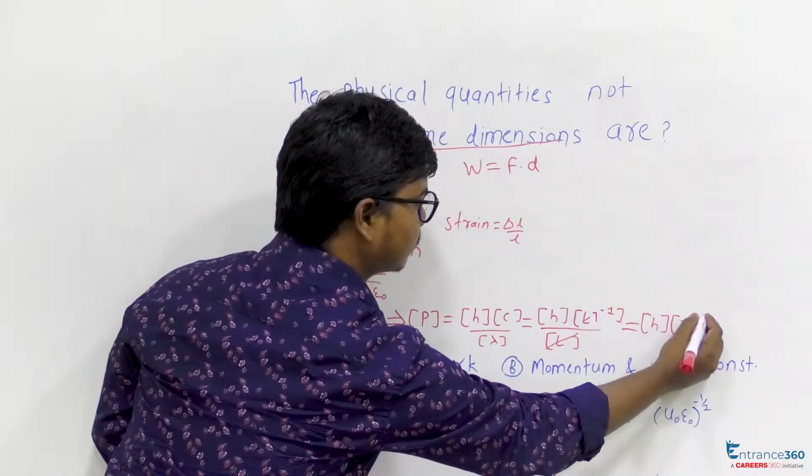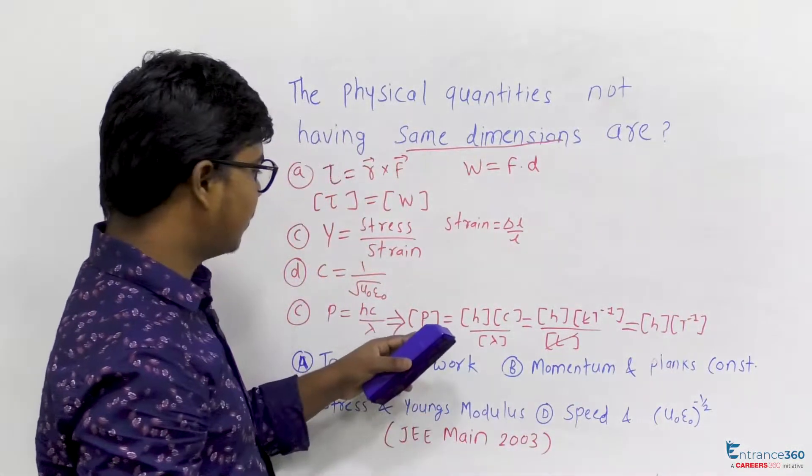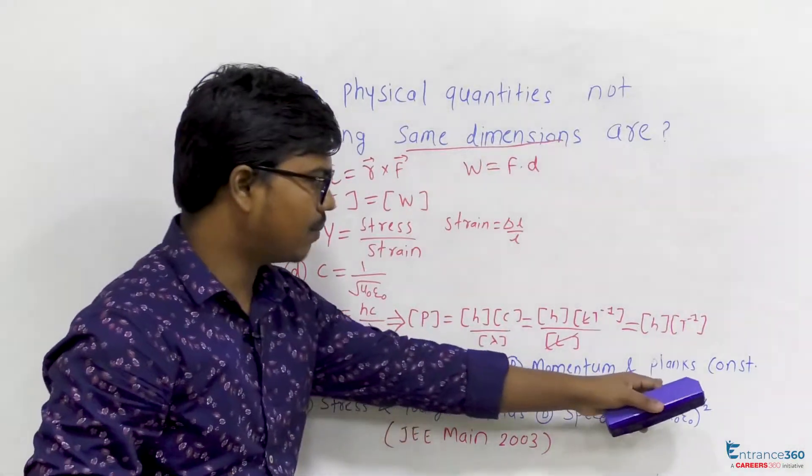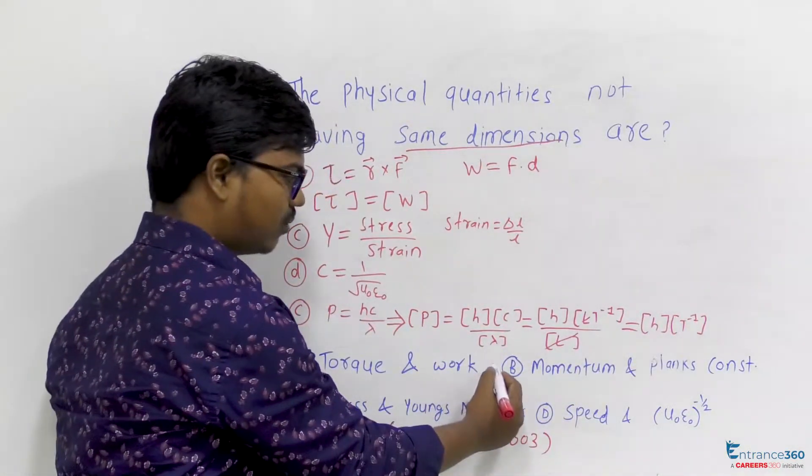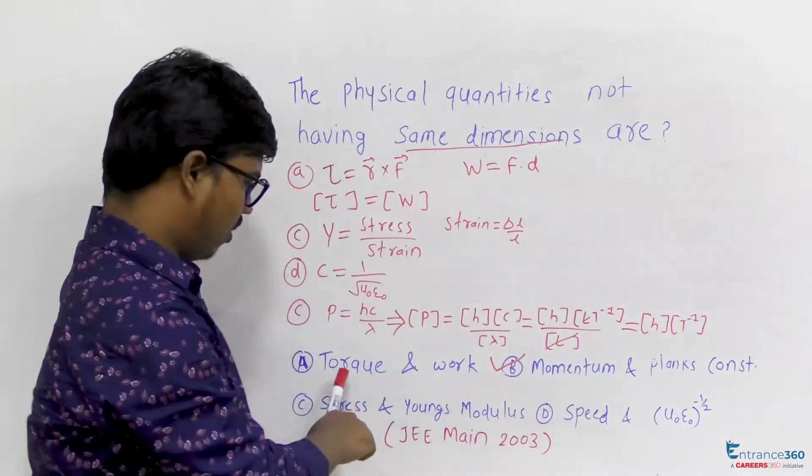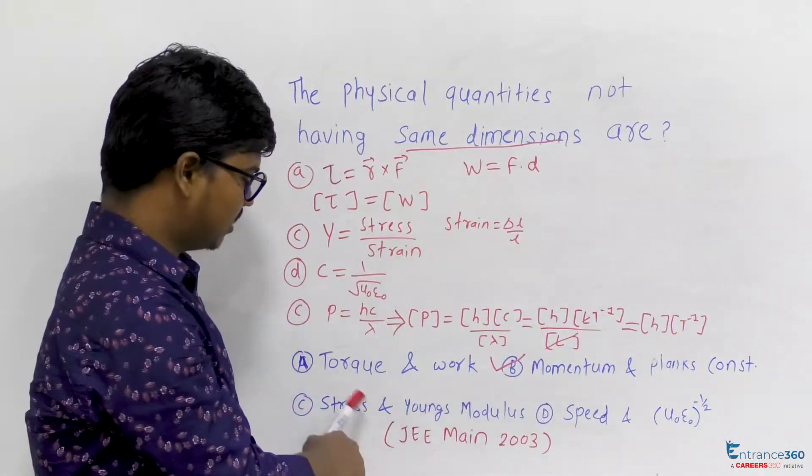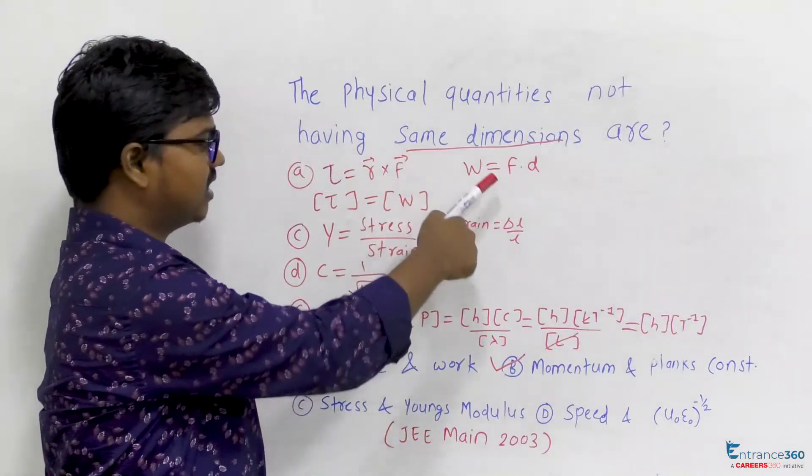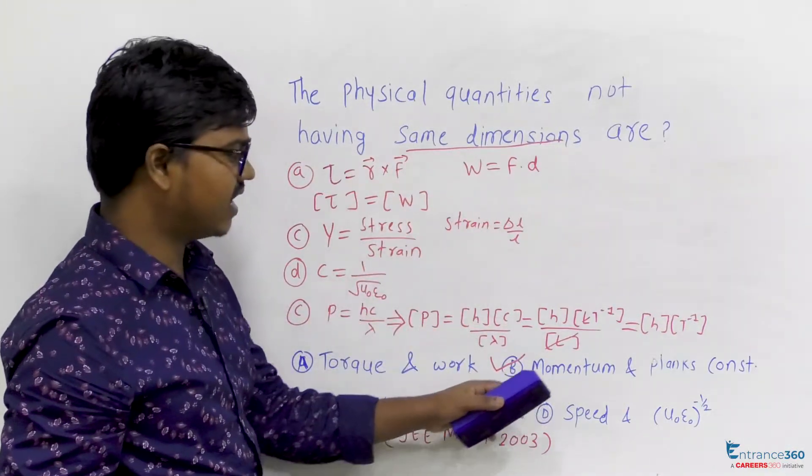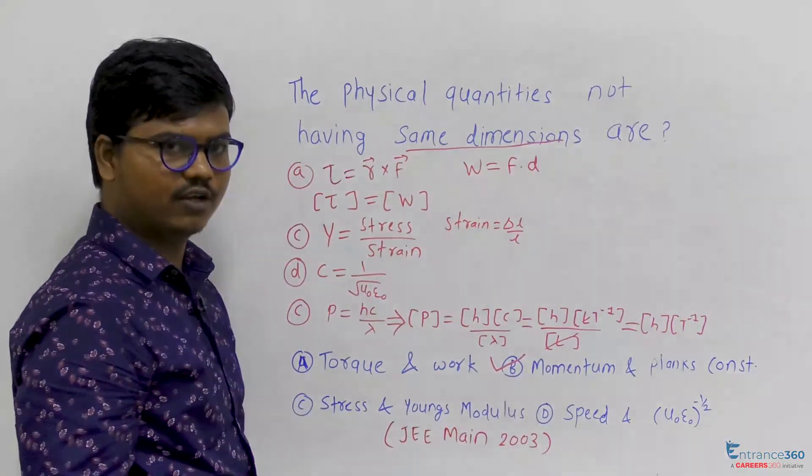So it is clear that dimension of P and dimension of Planck constant is not same. So our correct option is this. In all three other options we are getting same dimensions, and in option D we are getting different dimensions. Thank you students.